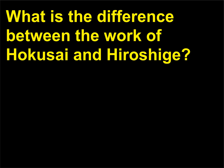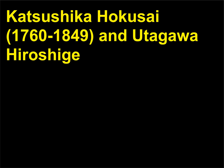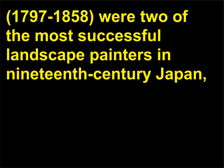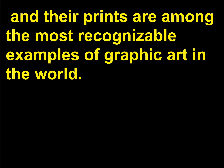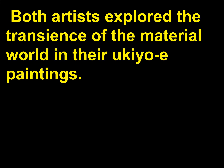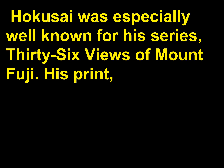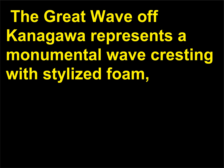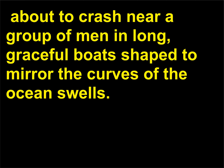What is the difference between the work of Hokusai and Hiroshige? Katsushika Hokusai (1760–1849) and Utagawa Hiroshige (1797–1858) were two of the most successful landscape painters in 19th century Japan, and their prints are among the most recognizable examples of graphic art in the world. Both artists explored the transience of the material world in their ukiyo-e paintings. Hokusai was especially well known for his series 36 Views of Mount Fuji. His print The Great Wave off Kanagawa represents a monumental wave cresting with stylized foam, about to crash near a group of men in long, graceful boats shaped to mirror the curves of the ocean swells.